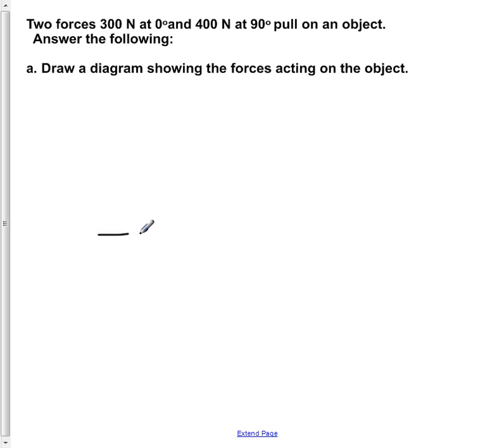So first we're going to draw our ground level here. This is the ground here. We're now going to draw our object to be a box centered on our ground here. We're now going to draw in both of our forces. The first one is a 300 N force at 0 degrees. So we're going to go to the right side of the box and draw in a force of 300 N at 0 degrees.